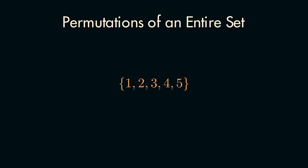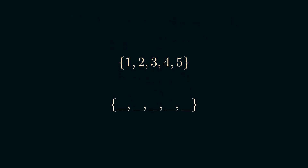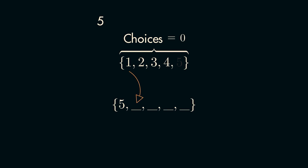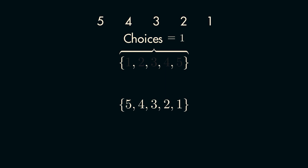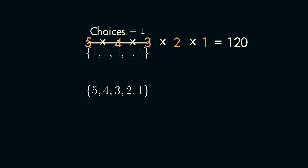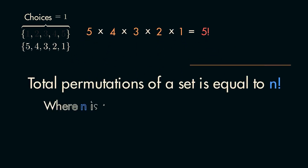The simplest case is when you want to find the total number of permutations for an entire set. If you think about the set {1, 2, 3, 4, 5}, how many ways are there to order this set? In this scenario, we need to make five choices about where each number will be placed. For our first choice, we can choose any of the five numbers. For our second choice, the number we selected previously is already in the set, so we have only four options. Under the same reasoning, we have three options for the third choice, all the way to our fifth choice, which isn't much of a choice because we only have one number to pick from. Using the fundamental counting principle, the total number of ways to order the set is 5 × 4 × 3 × 2 × 1, which equals 120. You'll notice that this is equivalent to 5 factorial, and the total number of permutations for an entire set of size n is equal to n factorial.